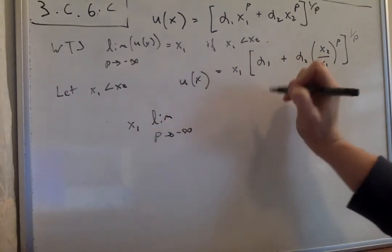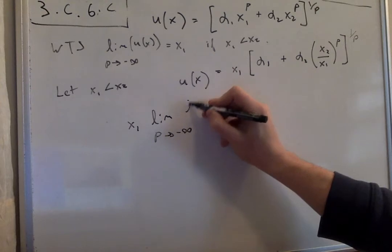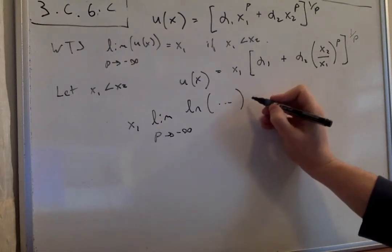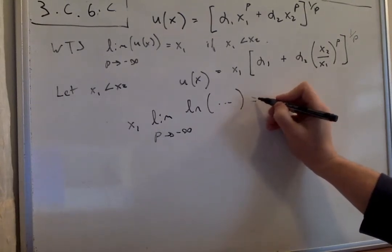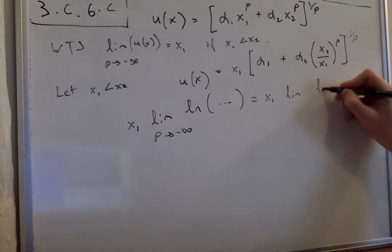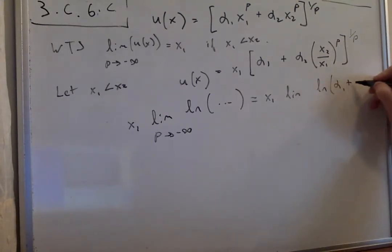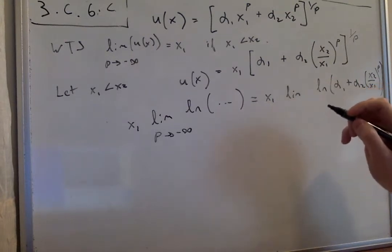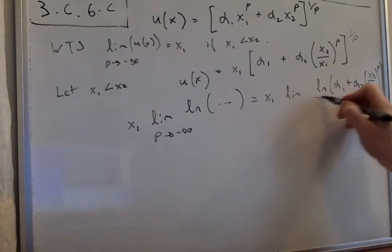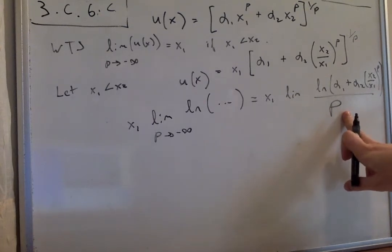The limit as ρ goes to negative infinity of the natural log of that, which I'm not going to write right now. We can rewrite that as x₁ times the limit of ln(α₁ + α₂(x₂/x₁)^ρ). That ρ is there because we applied the logarithm, so we can move the ρ down.